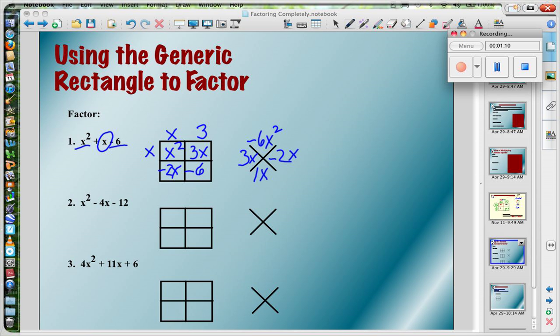And then in my bottom left, x times negative 2 is negative 2x. So final answer, in factored form, x plus 3 times x minus 2.